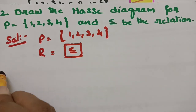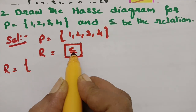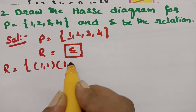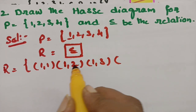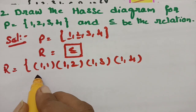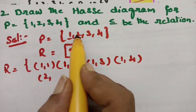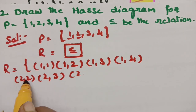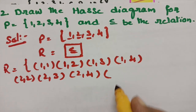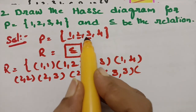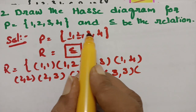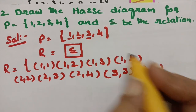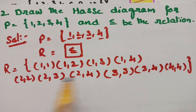Building the ordered pairs for the less-than-or-equal-to relation: (1,1), (1,2), (1,3), (1,4). For 2: 2 is greater than 1 so we leave (2,1); we have (2,2), (2,3), (2,4). For 3: 3 is greater than 1 and 2, so we leave those; we have (3,3) and (3,4). And finally (4,4). These are all the ordered pairs.